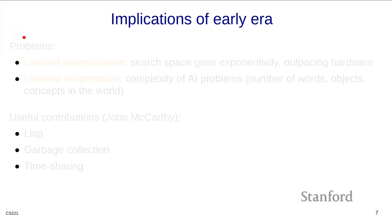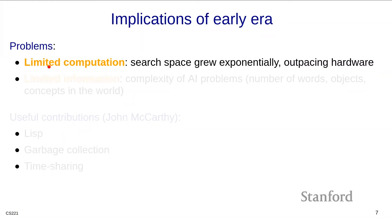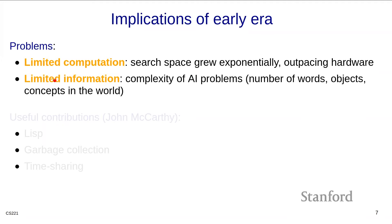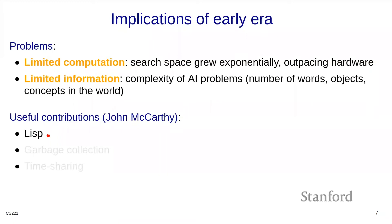So what went wrong? There are two things. First, most of the approaches involved casting problems as logical reasoning, which required a search over an exponentially large state space, and the hardware at the time was simply too limited. Second, even if the research had infinite compute, they still would not have been able to solve AI because there are just too many concepts in the world — words, objects — and all this information has to somehow be put into the AI system. These grand ambitions weren't realized, but nonetheless there were some useful contributions, many due to John McCarthy: Lisp was invented for AI and is arguably still the world's most advanced programming language, garbage collection was introduced, and time sharing — the ability to use a single computer by multiple people — was also prescient at the time.